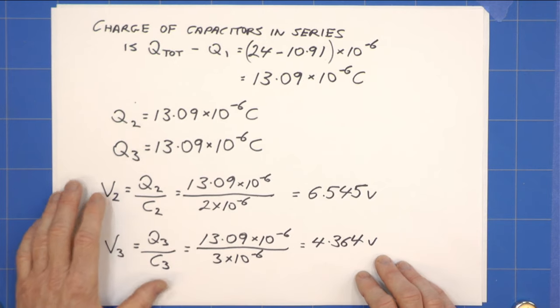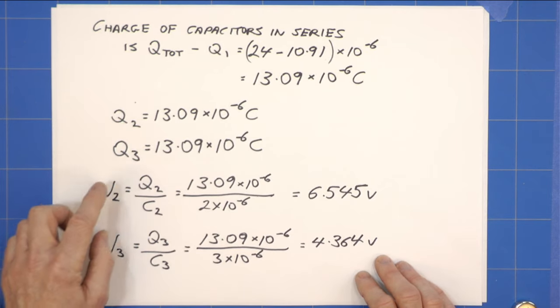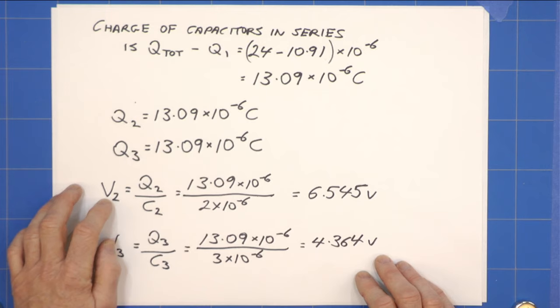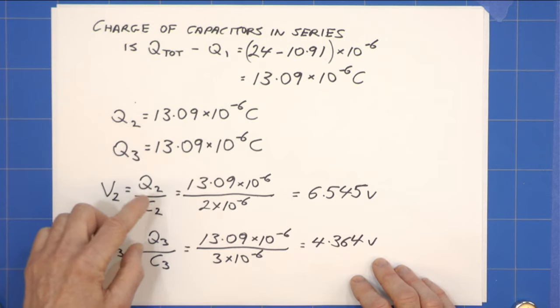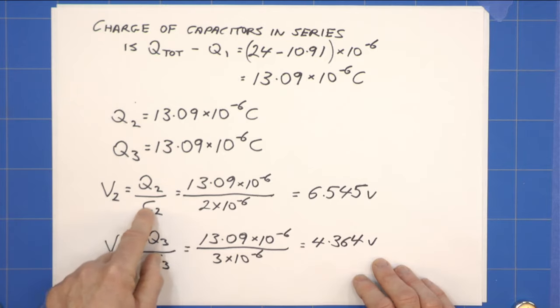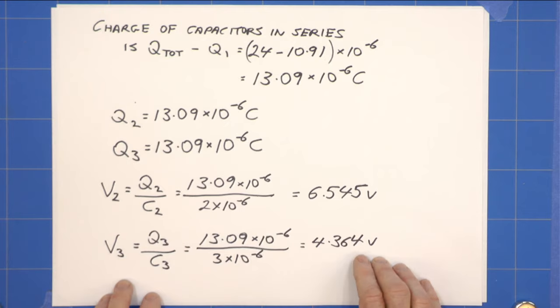And then it's fairly trivial. All we do then is say, right, the voltage on capacitor 2, the potential difference, will be the charge on capacitor 2 divided by the capacitance, 13.09 times 10 to the minus 6 over 2 times 10 to the minus 6, 6.545 volts.